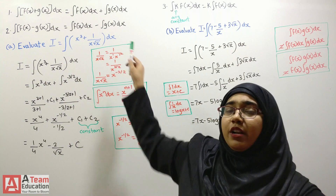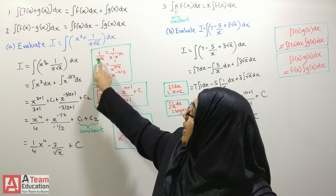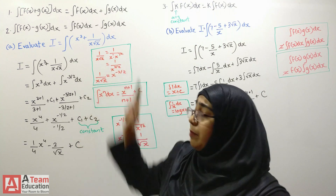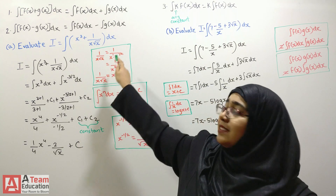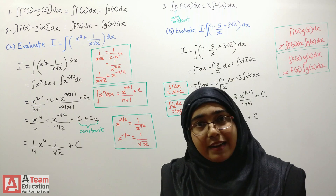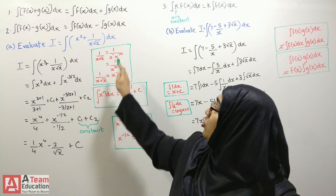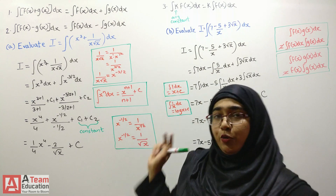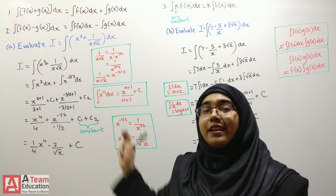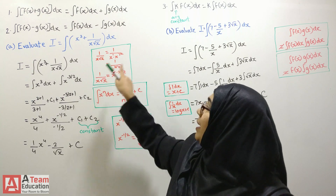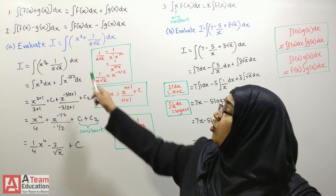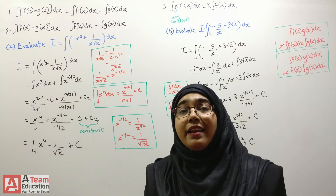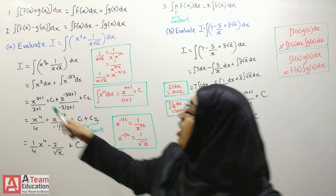Now, 1 over x root x means x to the power 1 times x to the power one-half. Since the two functions have the same base, we can add the powers. So x times root x is x raised to 3/2, which means 1 over x root x is x raised to minus 3/2.